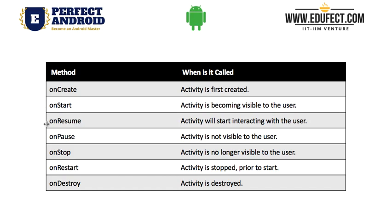onResume is the method or event we get when the activity can start interacting with the user. Interacting with the user means, suppose there is a button in it, so we can take inputs, we can scroll the app. When the activity is no longer fully visible to the user, we get onPause, and when the activity is just not visible to the user and has gone into the background, that is when we get onStop.